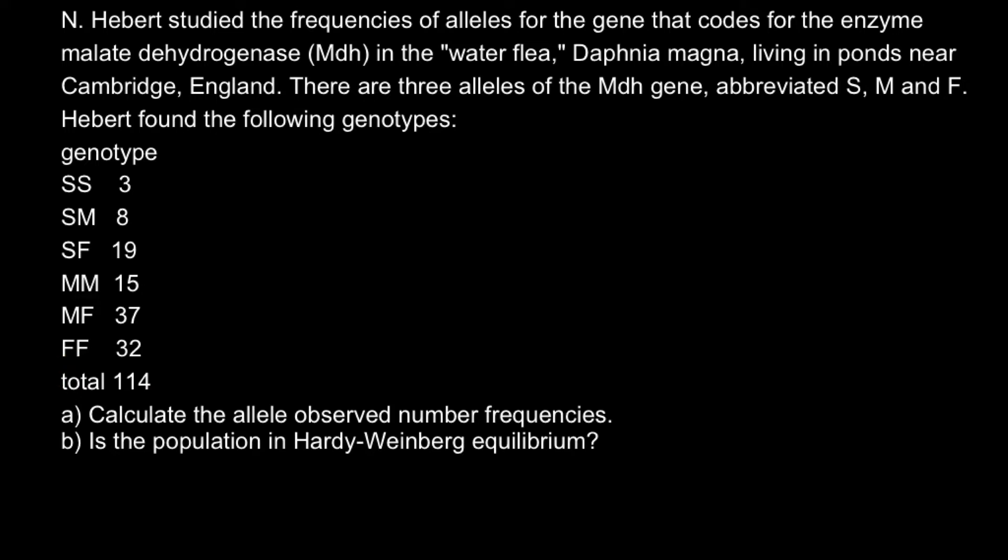Here are the two questions. Question A: calculate the allele observed number frequencies. And B: is the population in Hardy-Weinberg equilibrium or not? If you know how to solve this problem, you may stop the video here, try to solve it on your own first. When you are ready, you can run the video again and compare your answers with my answers and explanation.